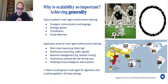There's also a large number of different application areas: multi-robot teams, distributed control, resource management, autonomous systems like self-driving cars, and my favorite, modeling human intelligence and evolution. What we would like is to have generic multi-agent reinforcement learning algorithms that could be applied across all these settings in sort of an off-the-shelf way. That's what generality should mean.